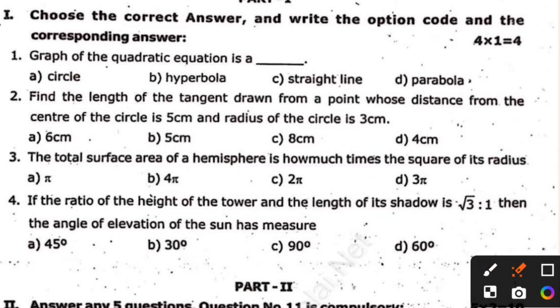On-mark. Graph of the quadratic equation. Find the length of the tangentron. The total surface area of the hemisphere is how much times the square of its radius. If the radius of the height of the tower, the length of its shadow is 3 to 1, then the angle of elevation of the sun has measured DASA.